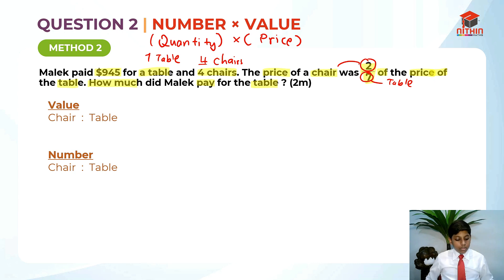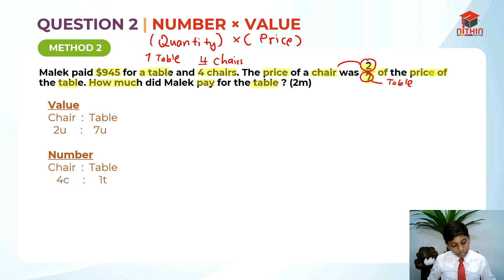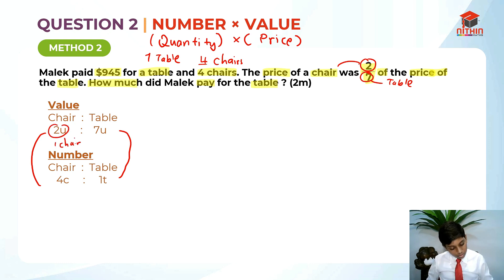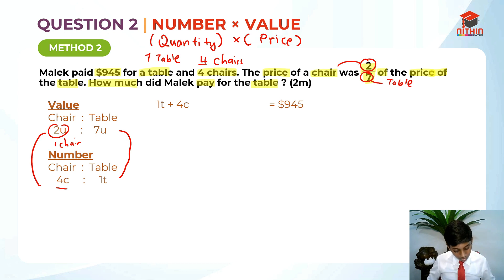We list down the ratios — chair to table. The value of 1 chair is 2 units and the value of 1 table is 7 units. The number is 4 chairs and 1 table. I represent table as T and chairs as C. So 4 chairs and 1 table. We must find the total units in total, because this is only representing 1 chair but this is 4 chairs in total. So we list down the first equation: 1 table plus 4 chairs is equal to $945.